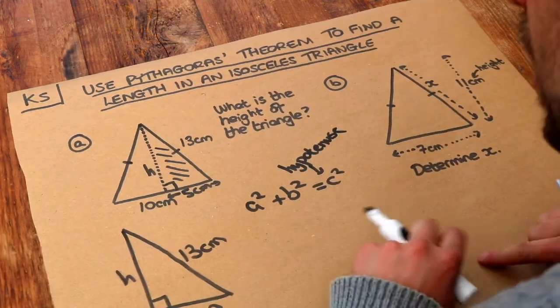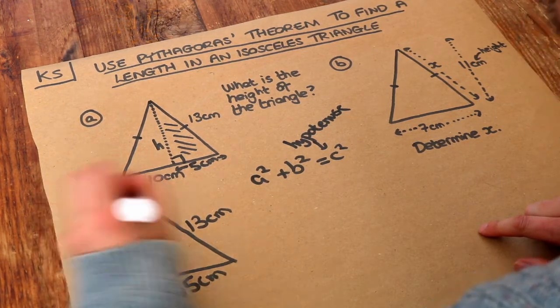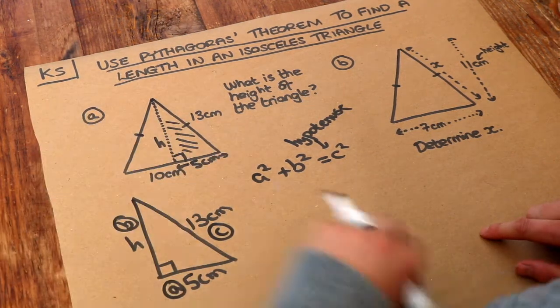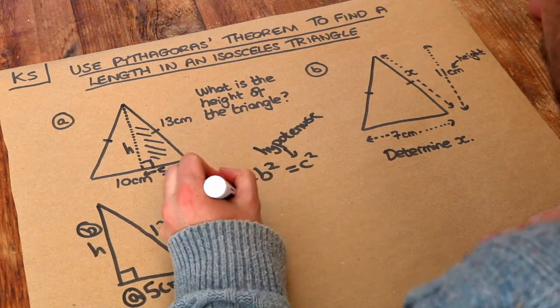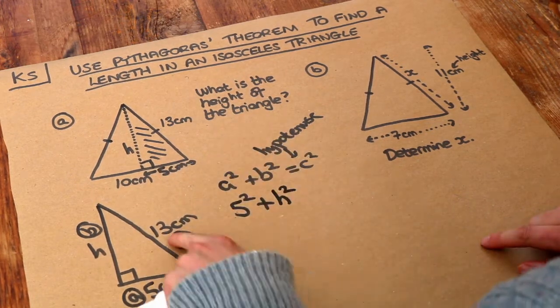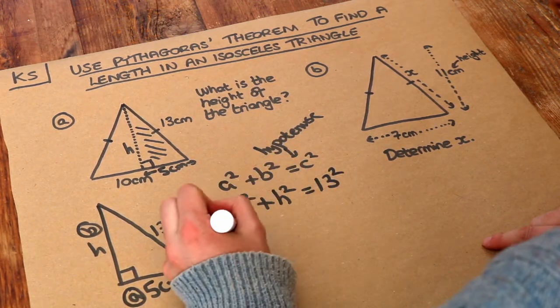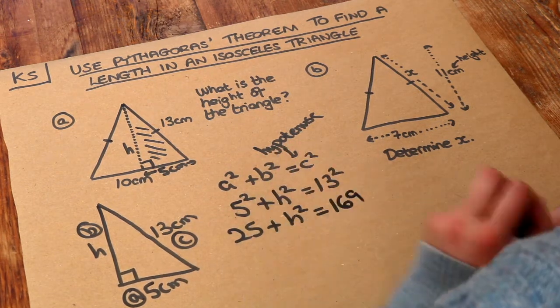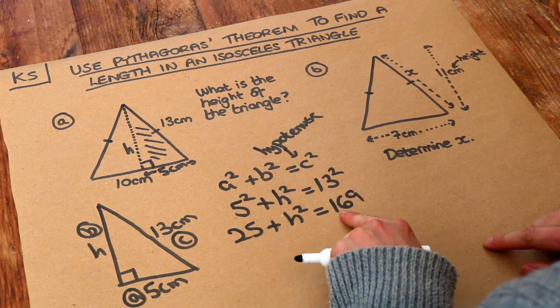So let's call this shorter length a, this shorter length b, and the longest length is c. Let's substitute these into the formula. We've got 5² + h² = 13². Then let's work out what 5² and 13² are. That's 25 + h² = 169.